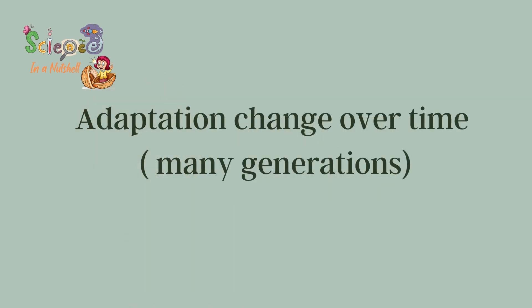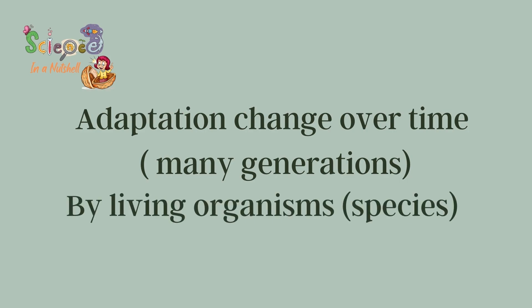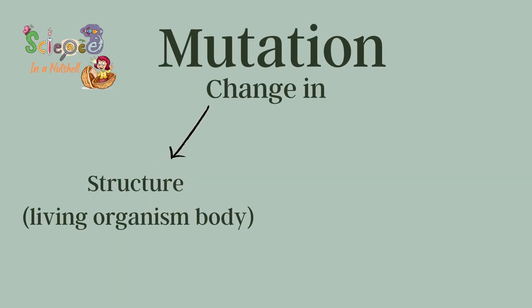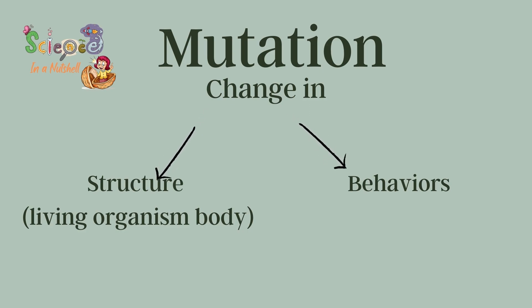Adaptation means a change over time by a living organism, or we can say by a species — and the word species means a group of living organisms — to adapt to their environment through mutation. The word mutation means a change in the structure or the behavior of the living organism, and we can put them together in one word, which we will call traits.